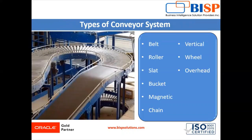There are many types of conveyor systems in warehouse management, like belt, roller, slat, bucket, magnetic, chain, vertical, wheel, and overhead. Each type has a specific purpose. For example, a slat conveyor is made from slats or plates instead of a belt and is designed for moving heavy material. Materials conveyed by a slat system are typically too large or too heavy for traditional belt movement.